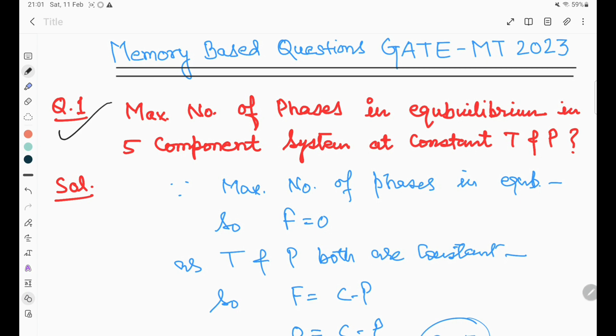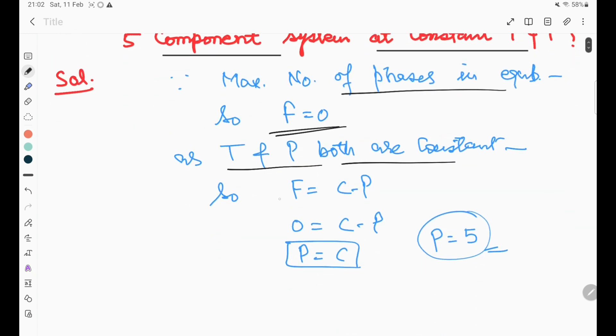The first question asks about the maximum number of phases in equilibrium with a five-component system at constant temperature and pressure. At maximum number of phases in equilibrium, F equals zero. As temperature and pressure are both constant, F equals C minus P. For maximum number of phases, F equals zero, so zero equals C minus P, where P equals C. The maximum number of phases is equal to the number of components available, so P equals 5 is the right answer.